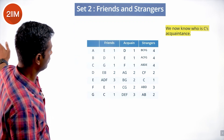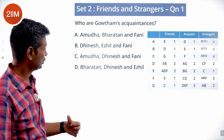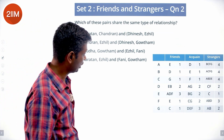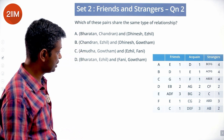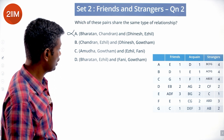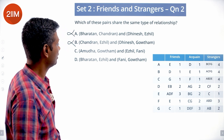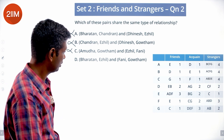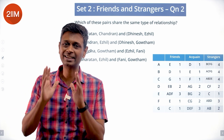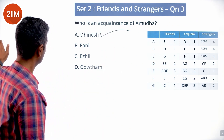Once we complete the grid, answering questions is straightforward. Who are Gautam's acquaintances? D, E, F — Dinesh, Edil, and Fani. Which pair shares the same type of relationship? Bharatan-Chandran (B, C) are strangers; Dinesh-Edil (D, E) are friends — not that. Chandran-Edil (C, E) are strangers; Dinesh-Gautam (D, G) are acquaintances — not that. Amudha-Gautam are strangers; Edil-Fani are friends — not that. Bharatan-Edil (B, E) are acquaintances; Fani-Gautam (F, G) are acquaintances — both are acquaintances. That works.